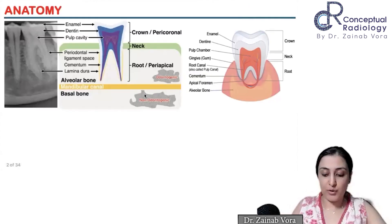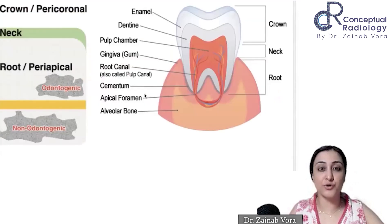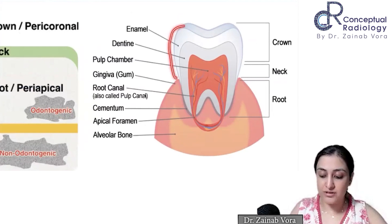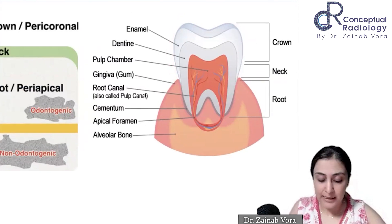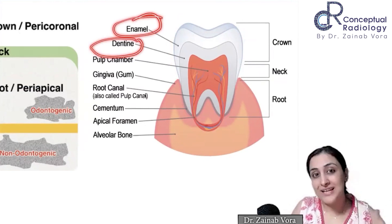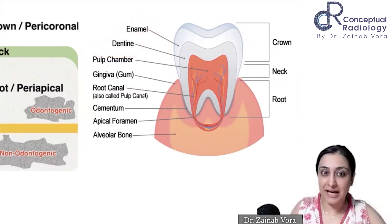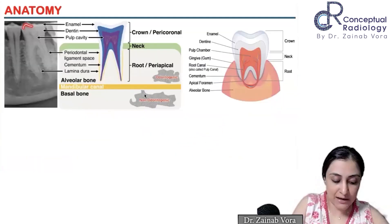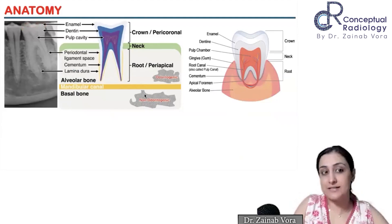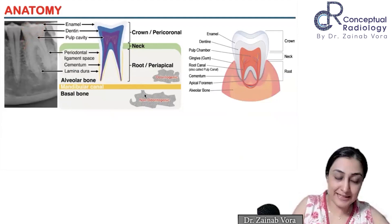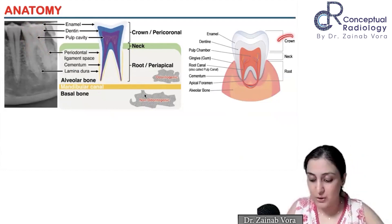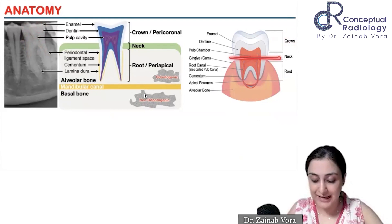Let's start with jaw lesions. When we talk about the tooth, I'm sure you've heard of all these parts and forgotten because we don't really study dental anatomy a lot — so a quick refresher. The most radiopaque part is the enamel. Below the enamel, radiopaque but not as mineralized, is the dentin. And then we have the pulp, which is the radiolucent part. The outermost white part on x-ray is enamel, below it is dentin, and the radiolucent area is the pulp cavity. The upper part is the crown, and then we have the neck and the root.